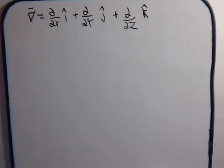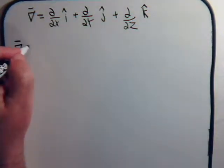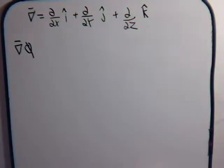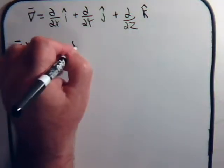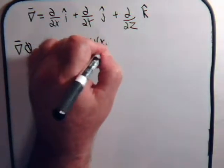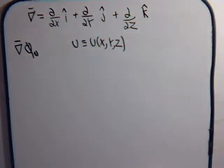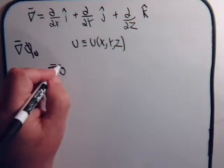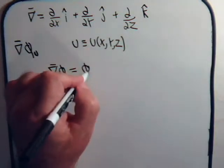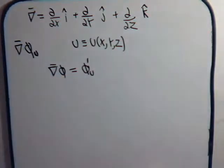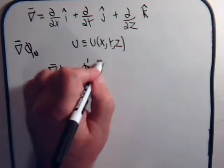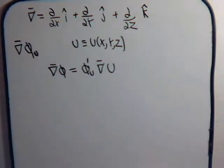Let's say that we're going to take the gradient of some scalar phi, where phi is some function of u, and u itself might be some function of the variables x, y, and z. In this case, the gradient of phi is equal to the derivative of phi with respect to u times the gradient of u. We'll show that this is true and then take some examples to clarify what it means.